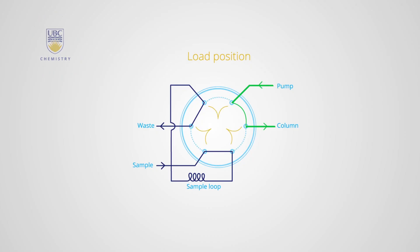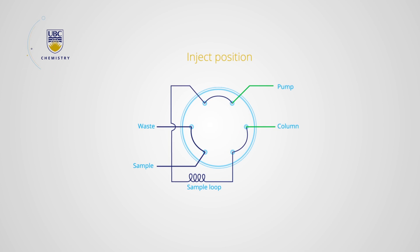Once the position of the loop is switched to the inject position, the mobile phase is directed through the sample loop, thus carrying the sample to the column.